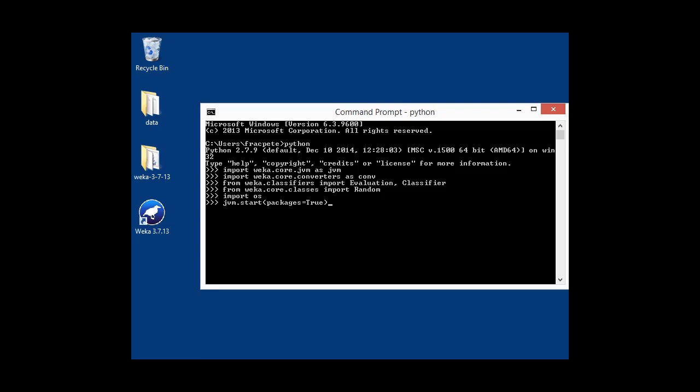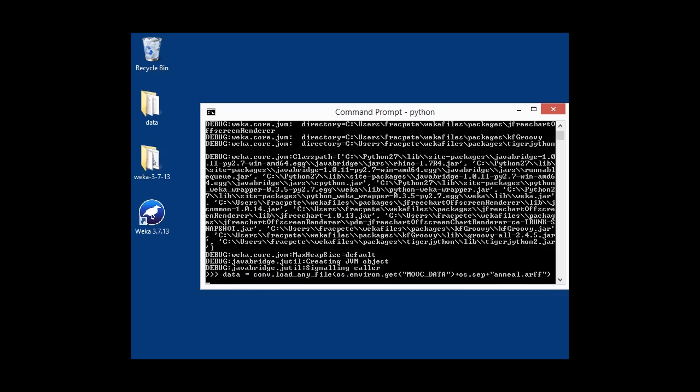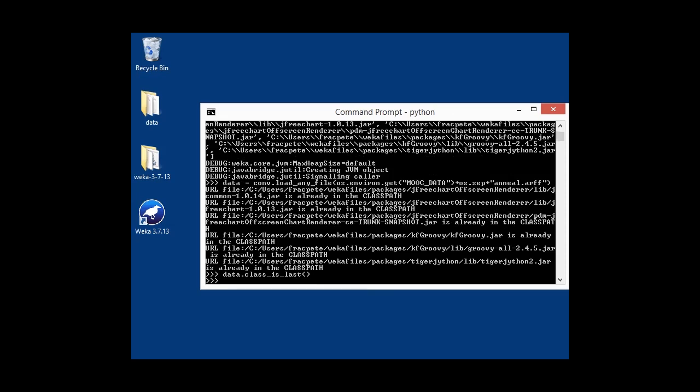You can see a lot of output here. It basically tells you what the libraries are in the class path, which is all good. Next thing is we're going to load some data. In this case, our anneal dataset. Once again, using the same approach that we've already done with Jython using the environment variable. That's loaded. Then we're going to set the class, which is the last one. And we're going to configure our J48 classifier.